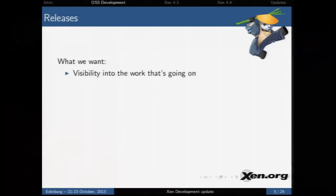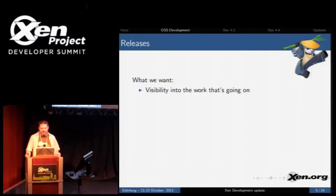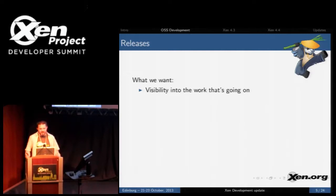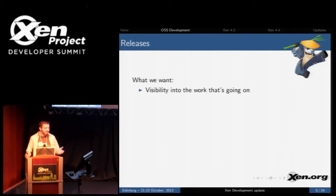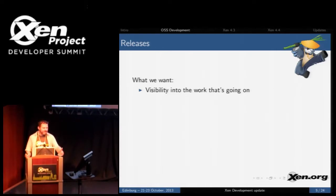We started this release management process because not having one led to problems. For Xen 4.2, it was about a year and a half in production, partly because there was no one in charge to say 'let's make a release now.' After a year passed, we looked and found the project was in no state to release — no one had been tracking what was needed. It was yet another six months of cleanup before we could actually release.